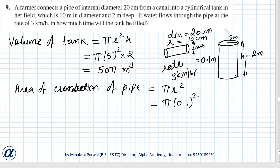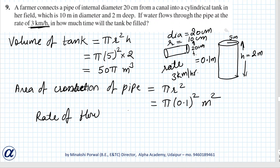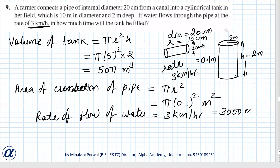Now the rate at which water is flowing is 3 kilometers per hour. Converting to meters: the rate of flow of water is equal to 3000 meters per hour.